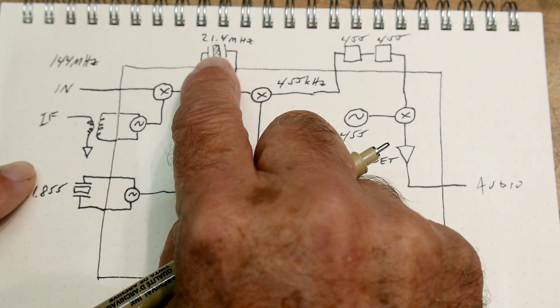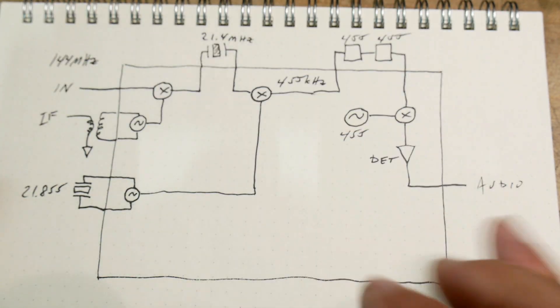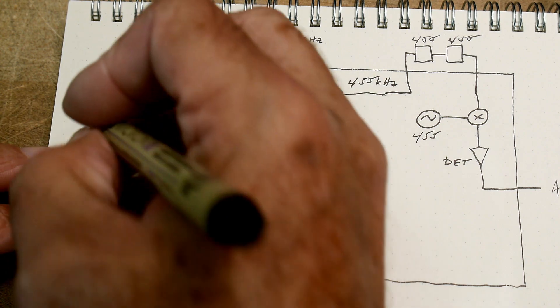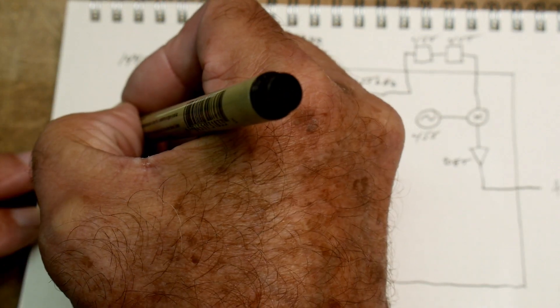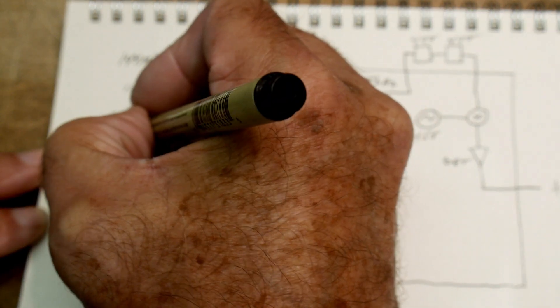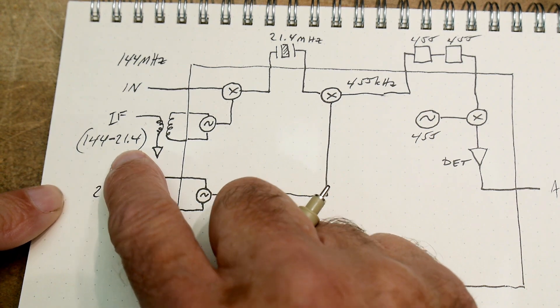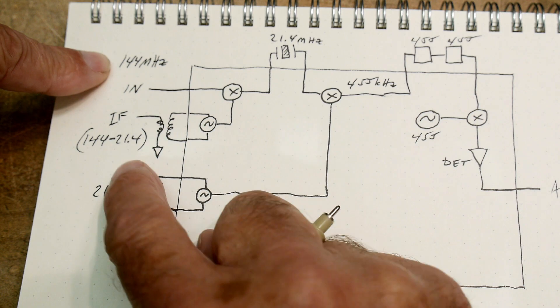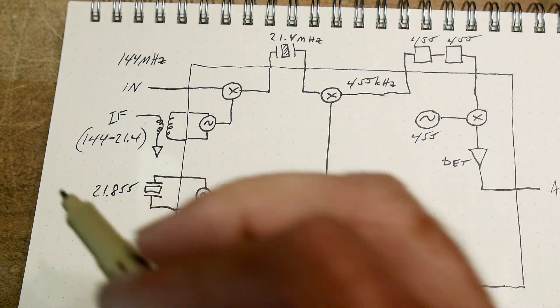So our IF frequency - that's the thing that we were generating with that other chip and all the diodes and everything - needs to be 144 minus 21.4 megahertz. So that's what our IF frequency would be. When the IF frequency comes in and mixes with this frequency, you end up with 21.4. So that's why you have an IF frequency.